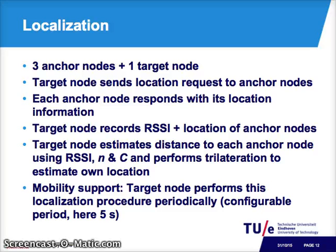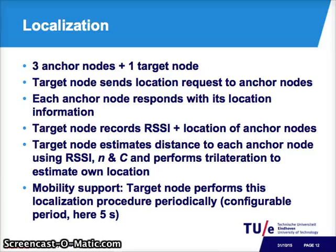For localization, we use three anchor nodes and one target node. When the target node comes up, it sends a location request broadcast. Each anchor node responds with its location information. The target records RSSI and location of each anchor, then estimates its distance to each anchor using RSSI, n, and c, and performs trilateration to estimate its location. We provided mobility support by making the target perform this localization procedure periodically — in our simulation, every 5 seconds.